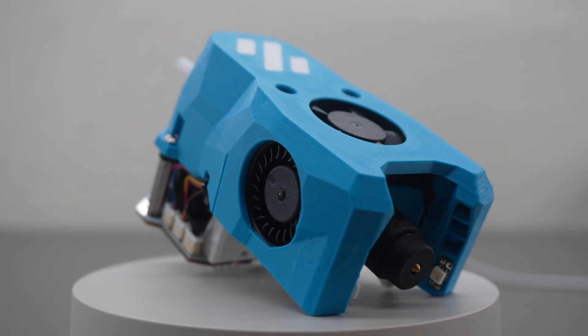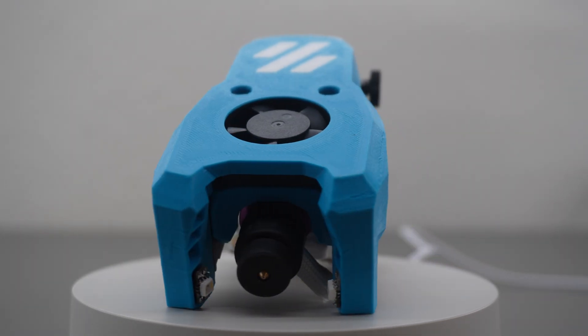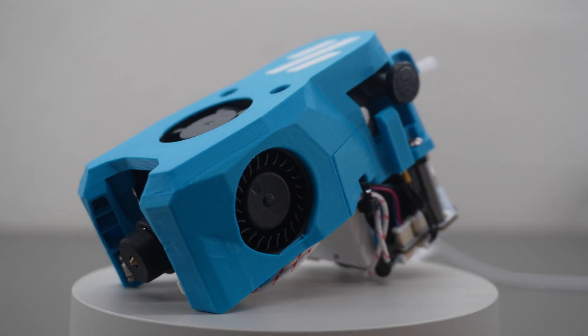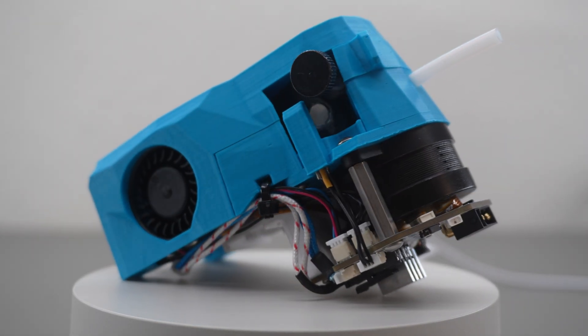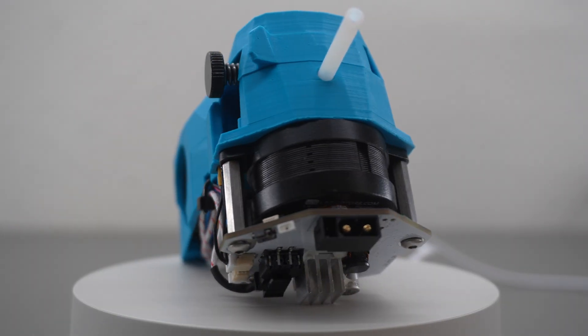Welcome back to my 3D printer build series. This video is all about building this toolhead for melting plastic. We'll start with building the stock Voron Zero extruder and modding it with a bunch of custom electronics, sensors, and software which you probably haven't seen before.